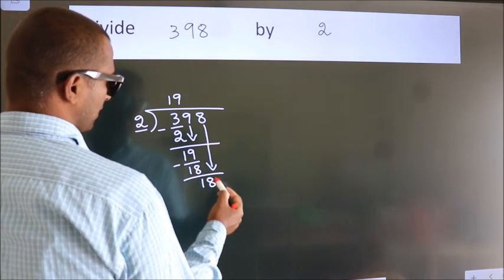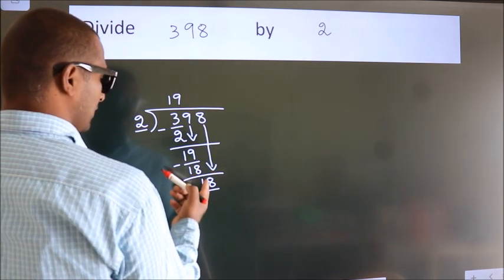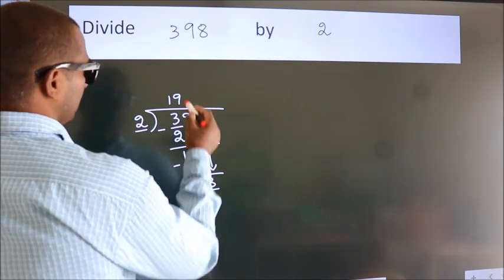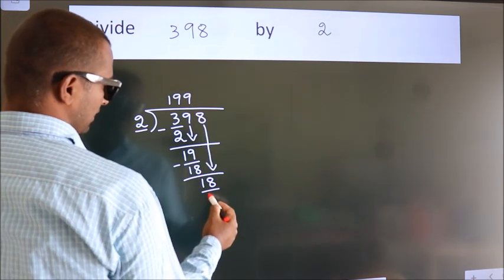So, 8 down. So, 18. When do we get 18? In 2 table, 2 nines 18.